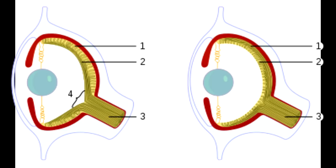What is missing from the octopus eye? In the octopus eye, one and two represent the nerve fibers and retina. In the vertebrate eye, number one represents the retina and number two is the nerve fibers. In both eyes, number three represents the optic nerve.